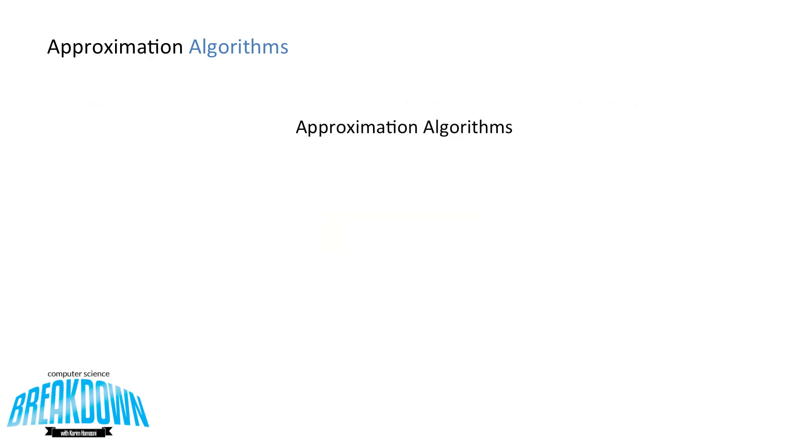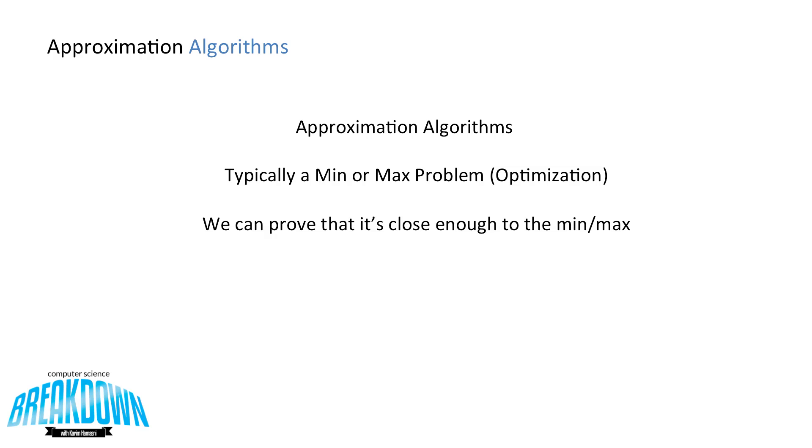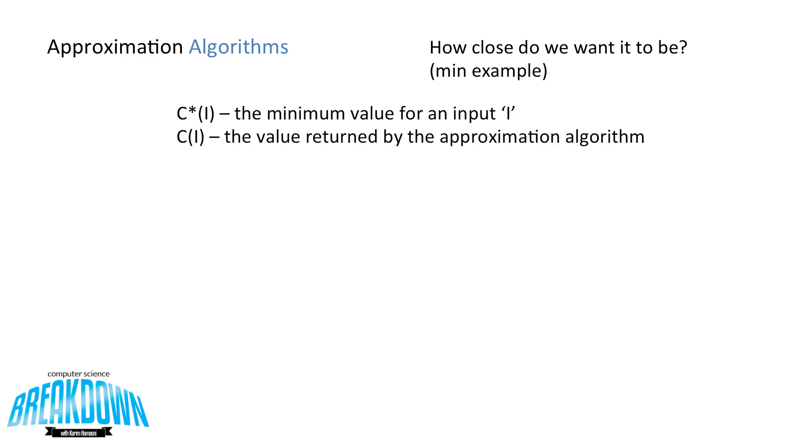So approximation algorithms are typically applied to a min or max problem, otherwise known as an optimization problem, and we can prove that it's close enough to the actual min or max value. So how close do we want it to be to, let's say, a min example, which I'm going to go over right now.